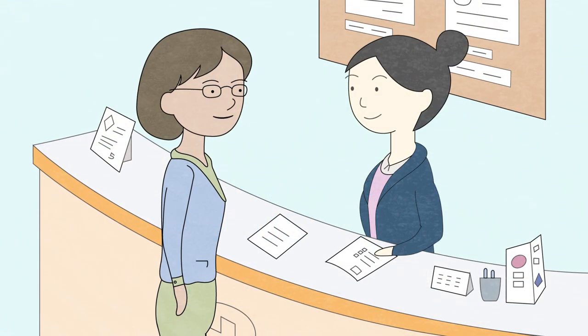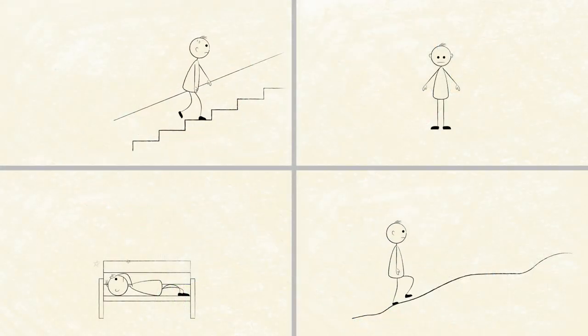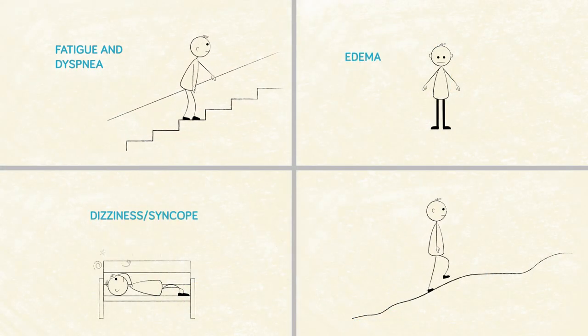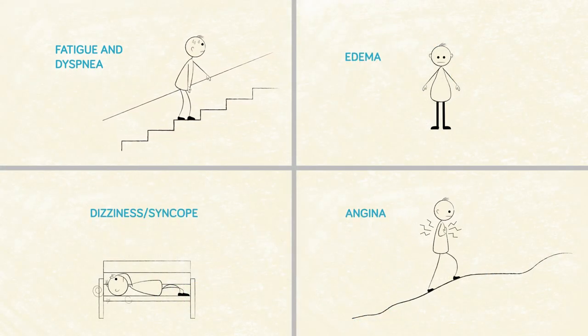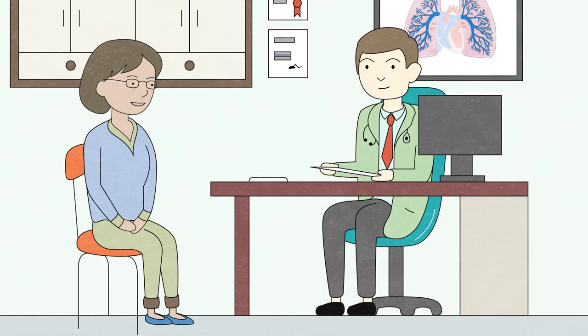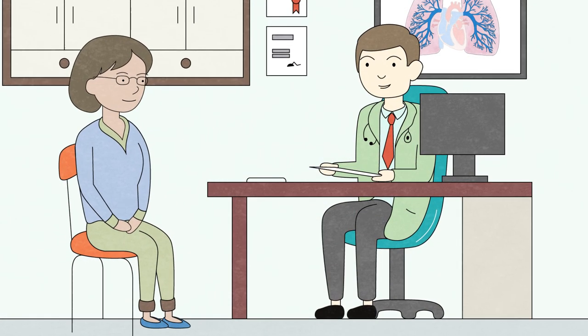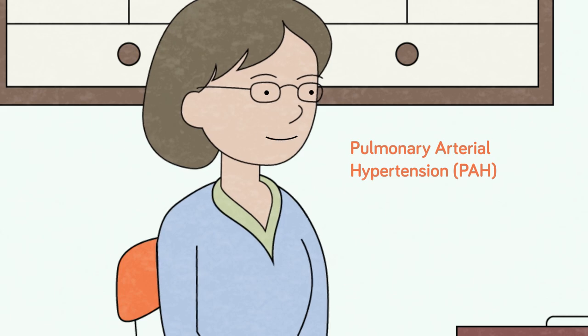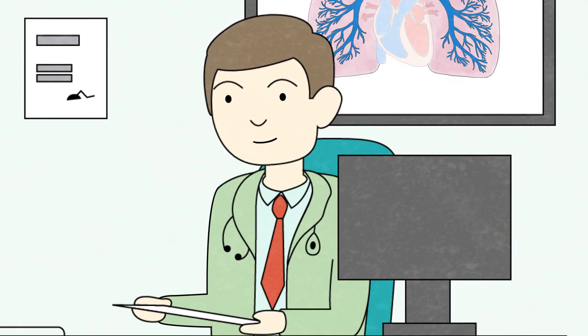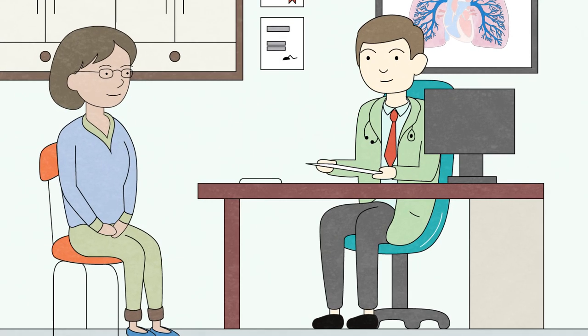Once a patient has persistent signs and symptoms leading them to seek medical intervention, additional tests are necessary to clearly identify pulmonary arterial hypertension from other types of heart and lung diseases with similar symptomology.